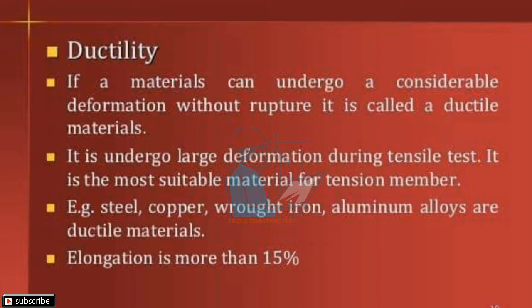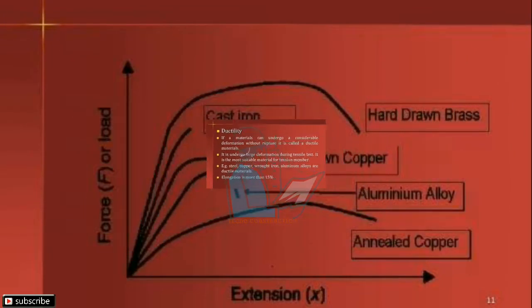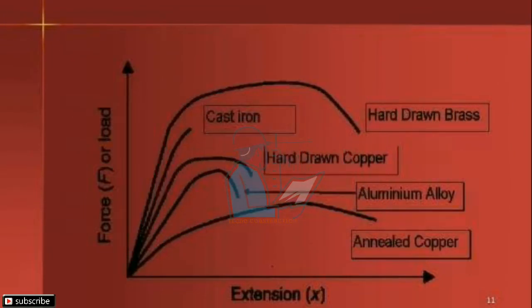You can see the graph of force to extension for different types of metals: cast iron, hard-drawn brass, hard-drawn copper, aluminium alloy, and annealed copper.